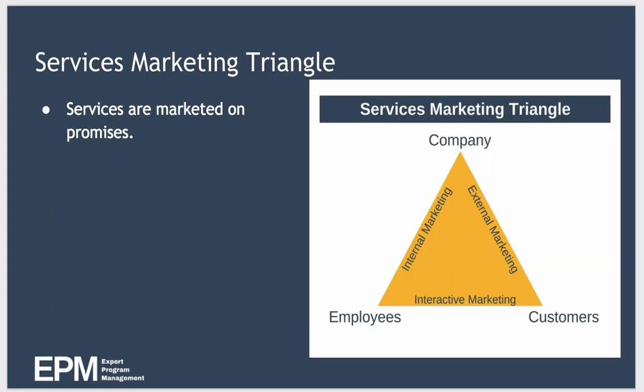All service businesses are marketed on promises — the promises we make to customers and whether we keep or fail to keep those promises. The services marketing triangle is a visual strategic model and it reinforces the importance of people in a company's ability to keep its promises. Each actor works together to develop, promote and deliver a company's service, and we represent actors by the points on the triangle.